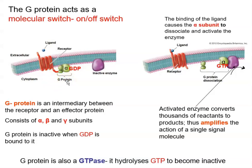Looking closely at the G-protein, it consists of three subunits: alpha, beta, and gamma. When the G-protein is not active, there is a GDP molecule bound to it. GDP is a nucleotide similar to ADP, except that instead of adenine, we have guanine. When the alpha subunit has GDP bound to it, the G-protein is basically inactive.